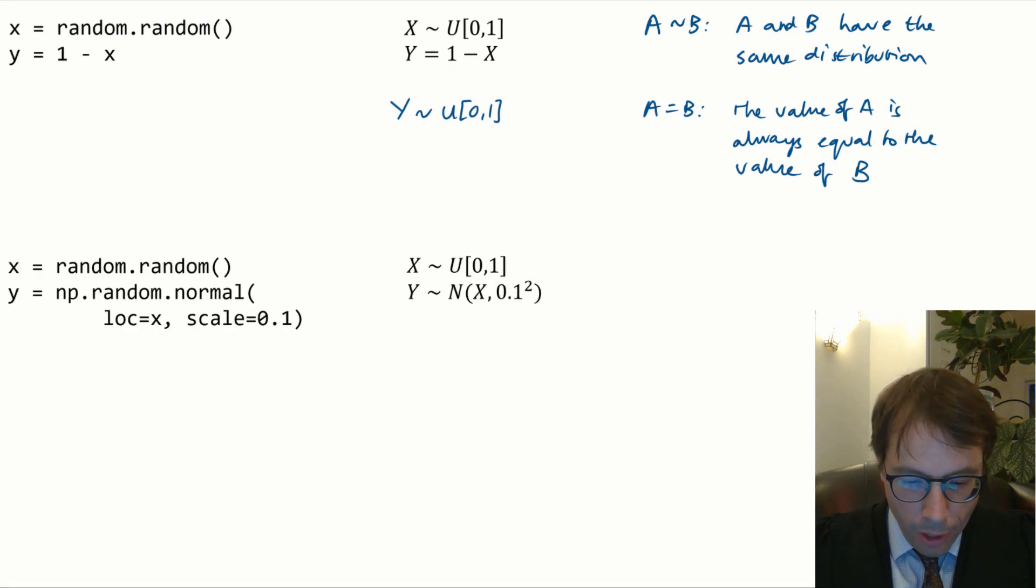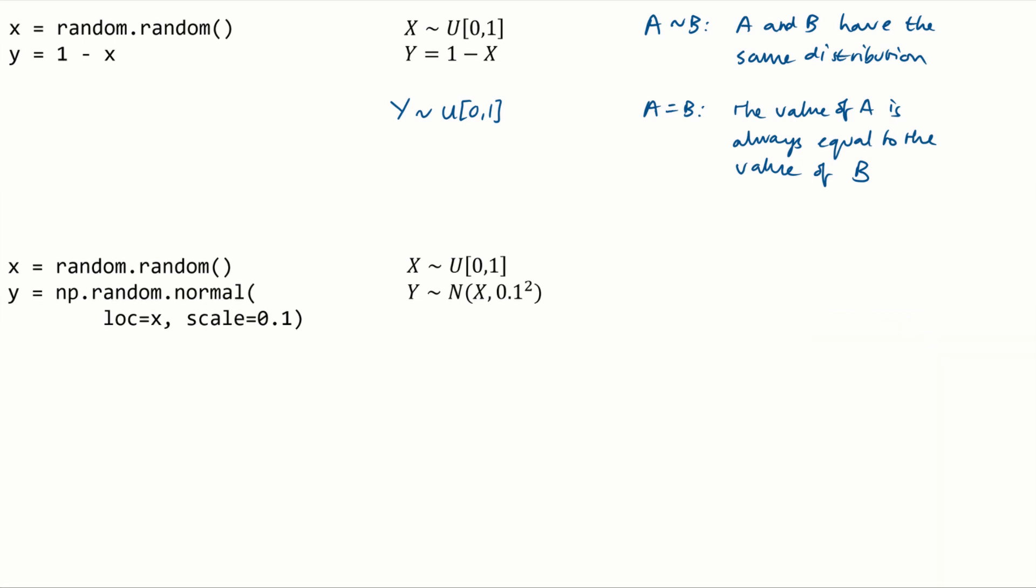If you see a random variable on the right-hand side of a maths expression, like in this example, what it means is generate x first and then, given the value of x, use that to generate y. This will obviously produce a pair of non-independent random variables.